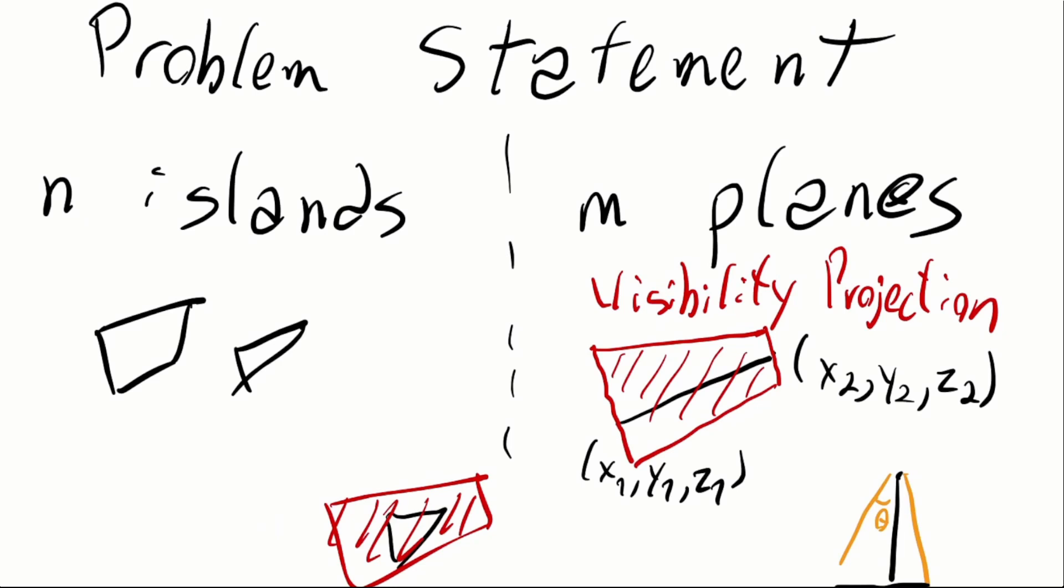So first of all, in the problem statement, we are given an archipelago in a 2D plane with n islands. There are at most 100 islands, and each of them can have at most 100 vertices, and they are represented by a polygon.